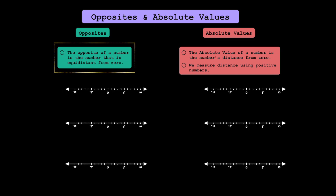The opposite of a number is the one number that is equidistant from zero. When I say two numbers are equidistant from zero, they are the same distance from zero. Let's look at the number 4 here. Plotting 4 on the number line will be a little bit to the left of 5. Here's 4. So what's 4's distance from zero? Turns out it's just 4 units away. There's only one other number in the world that is also 4 units away from zero, and that number is going to be negative 4.